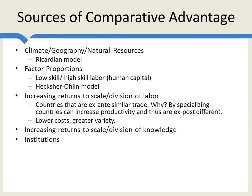Institutions can also generate comparative advantage. For example, some countries have more labor market flexibility than others. Countries with a lot of flexibility — where they can take workers from one area of the economy and move them quickly into another — tend to specialize more in high-value products for which there's a lot of variability in demand. Another example is finance. Some countries have better banking structures. If you're going to need a lot of finance, you'll want to be in a country like the United States, where you can easily raise a lot of capital. That gives a big comparative advantage in production which requires huge amounts of capital.